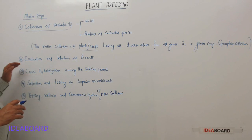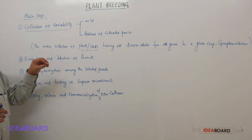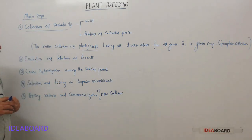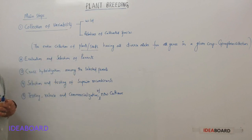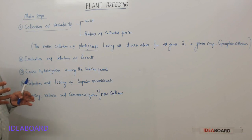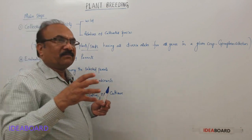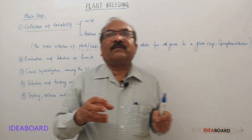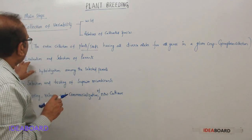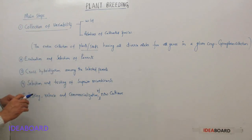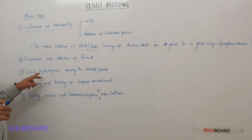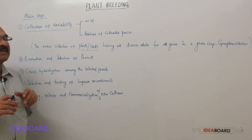The second step is evaluation and selection of parents. From the germplasm collection, breeders select parents based on their knowledge of desirable characters. They search for the desirable character among the germplasm and select the best parents. After selection, they proceed to step three: cross-hybridization among the selected parents.